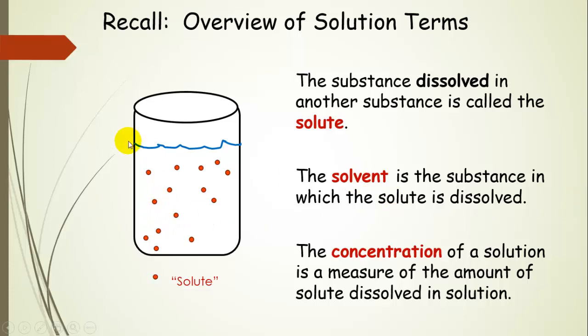The solvent is the liquid phase often. It doesn't have to be, but it's often the liquid phase. And this is the substance in which the solute is dissolved. So there's a lot more solvent than solute. And when we talk about the concentration of a solution, we're talking about how much of the solute is dissolved in solution. So it's a measurement of that amount, the amount of solute that's dissolved in solution.